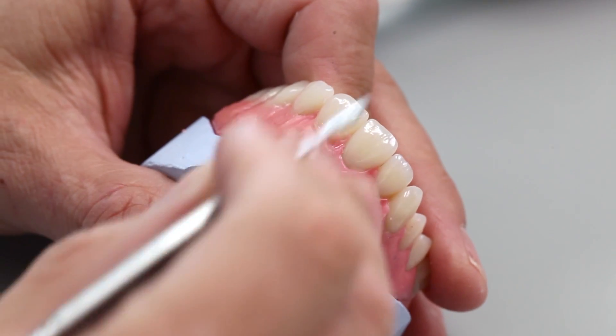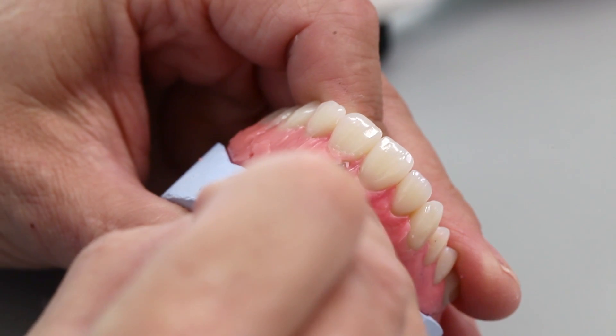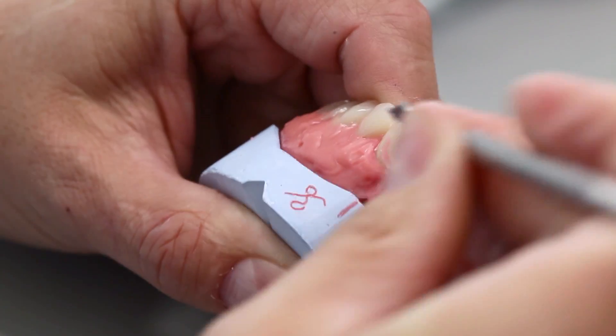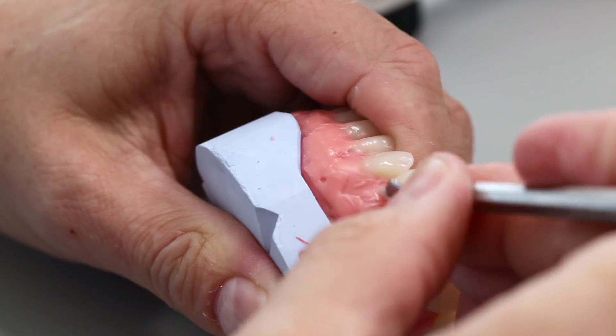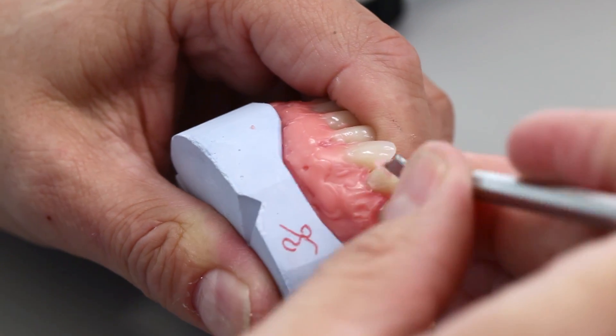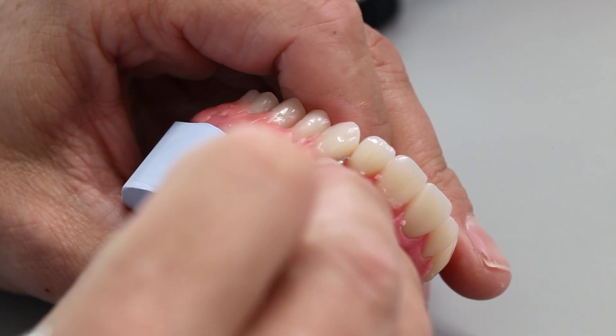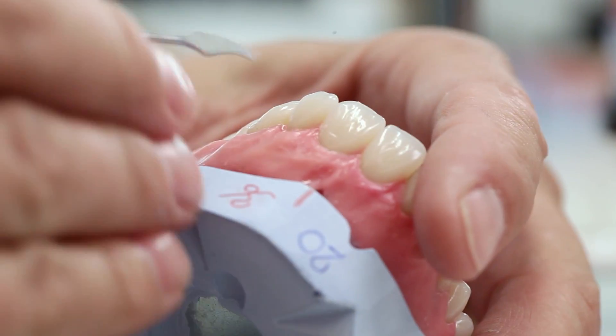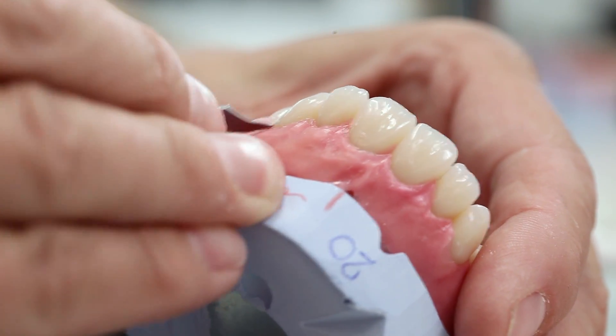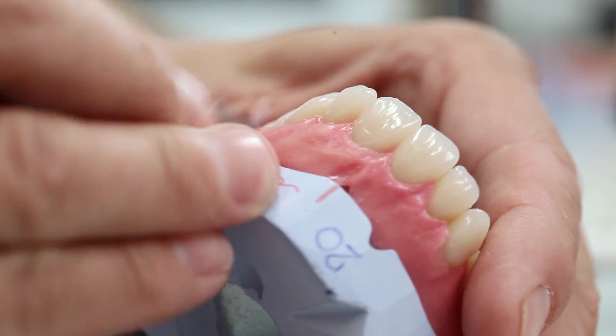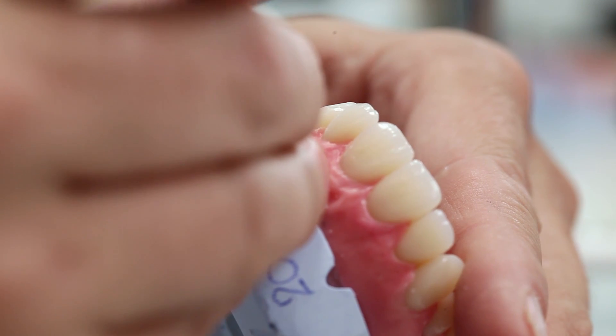The following important points have to be considered in this context. Basically, contour the gingiva in such a way that it's easy to clean and has a life-like appearance. Two prominent contours such as balconies must be avoided. In the maxillary anterior region, the gingival margin tends to run the highest in the distal third. In contrast, the lowest point in the mandible tends to be in the centre area.